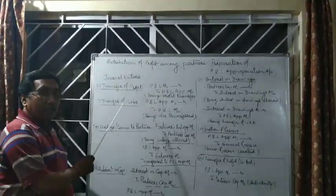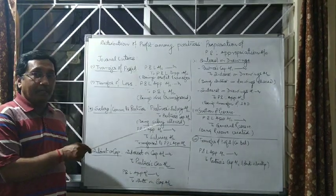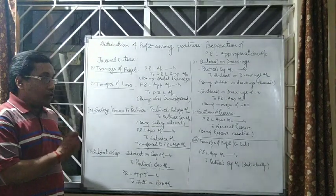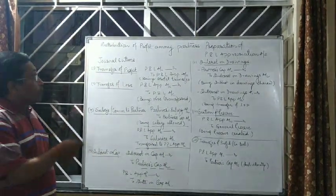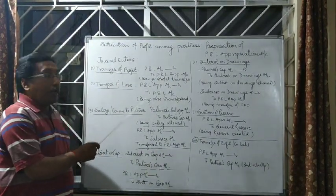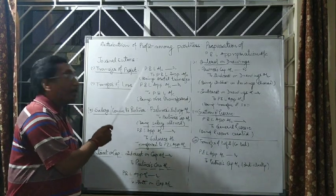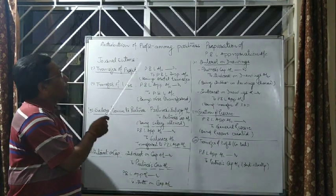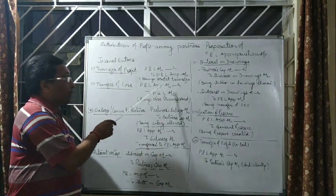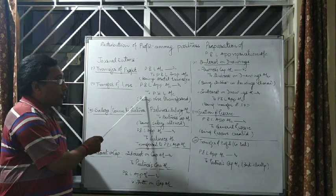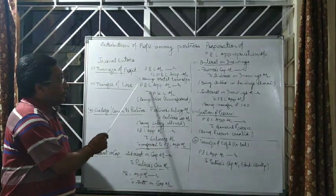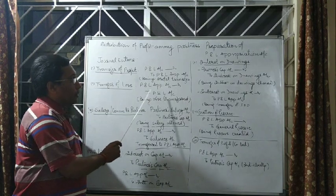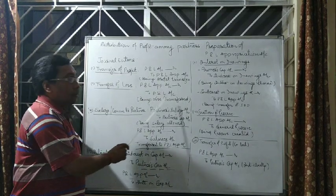Similarly, if there is loss, profit and loss account will show a debit balance, which means you have to close the account. If it shows debit balance, it must be credited and the amount will be transferred to profit and loss appropriation account. Hence, the entry is: profit and loss appropriation account debit to profit and loss account, being loss transferred.